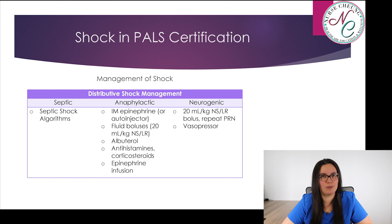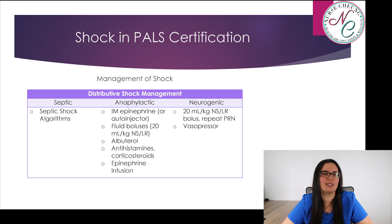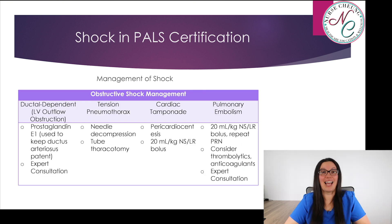For neurogenic shock, we're going to do the same: 20 mLs per kilogram of normal saline or lactated ringer boluses as needed, and we may even want to consider vasopressors if indicated.